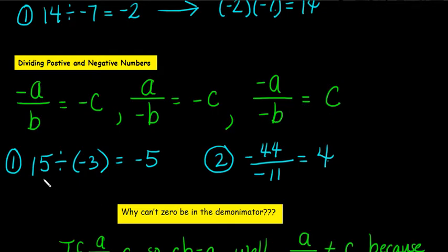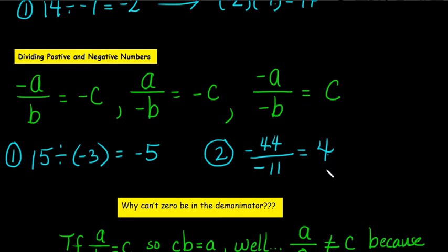Here's a couple examples. 15 divided by negative 3 is going to give you negative 5, and negative 44 divided by negative 11 equals 4. And remember, if I'm going too fast, just pause it and be sure you put this in your notes.